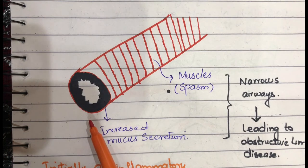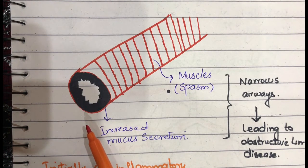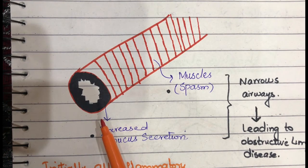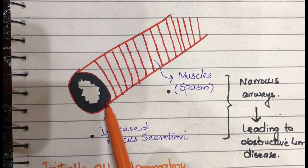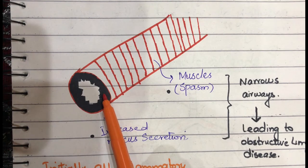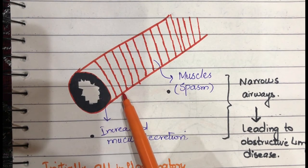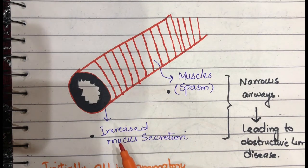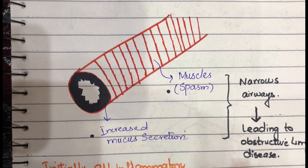Inside asthma there is an allergic and inflammatory process occurring. As stated in the definition, it is a chronic inflammatory process. In this chronic inflammatory process, when there is increased production of inflammatory cytokines, the production of mucus increases. Due to increased mucus production, the lumen of the bronchioles begins to narrow. Additionally, smooth muscle spasm begins to occur, and with increased mucus secretion, airway narrowing occurs, leading to obstructive lung disease. Asthma is also a type of obstructive lung disease.